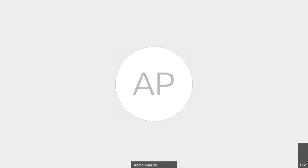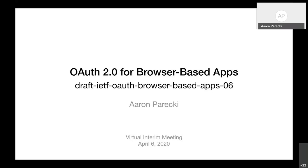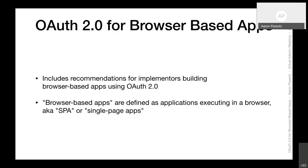Aaron begins presenting OAuth for browser-based apps — a draft that includes recommendations for people building browser-based apps using OAuth, specifically apps executing in a browser, also known as single page apps. The idea is this complements the OAuth for native apps recommendations for specific things that are unique to a browser-based environment.